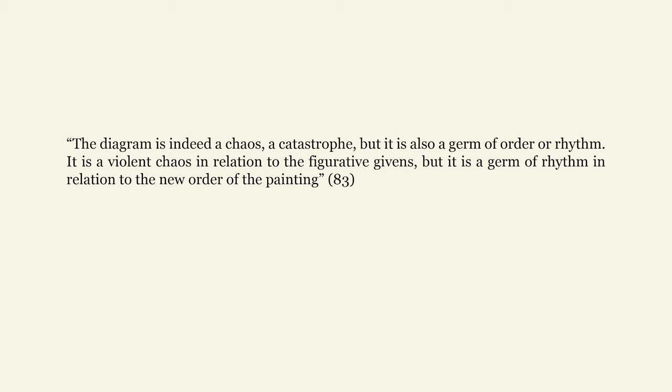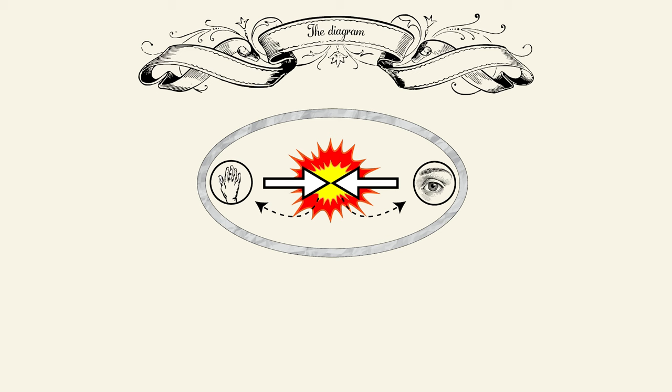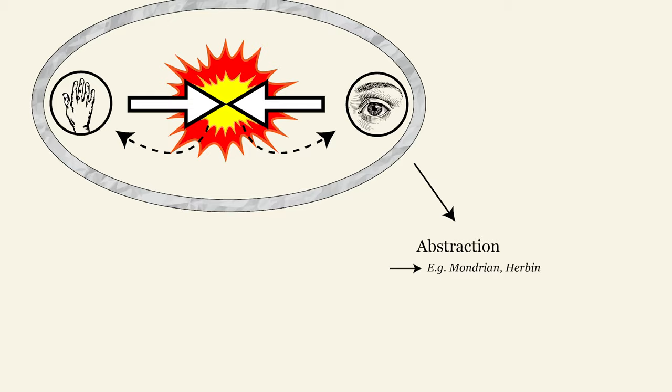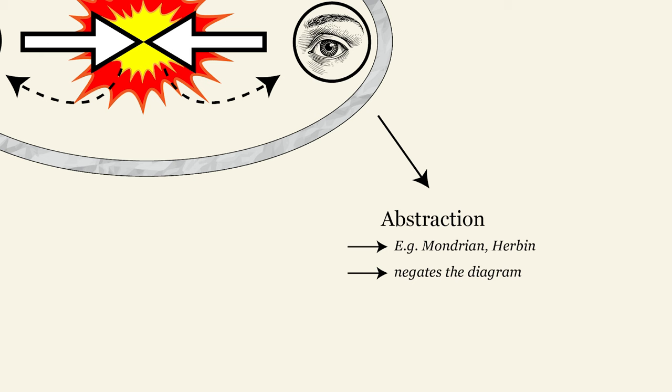The diagram is indeed a chaos, a catastrophe, but it is also a germ of order or rhythm. It is a violent chaos in relation to the figurative givens, but a germ of rhythm in relation to the new order of the painting. This new order can give way to two opposite situations. First, it can happen that the eye wins over the hand, and the new order becomes a pure abstraction. Deleuze says: abstraction is a path that reduces the abyss or chaos, as well as the manual, to a minimum. It offers us an asceticism, a spiritual salvation. Through intense spiritual effort, it raises itself above the figurative givens, but turns chaos into a simple stream to cross in order to discover abstract and signifying forms. In abstraction, it is the eye, or passive vision, which dominates the hand — it tends to negate the diagram.